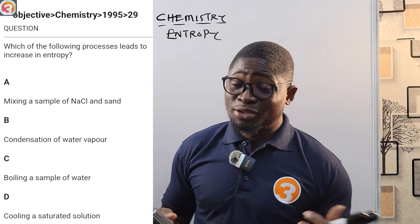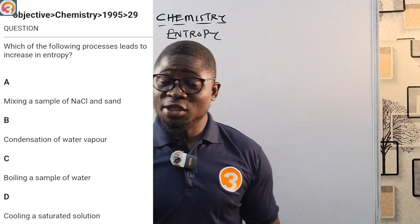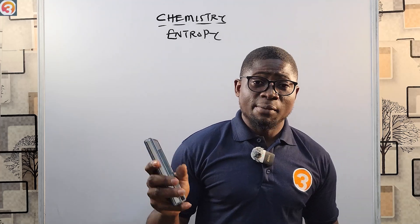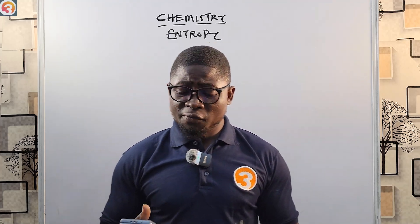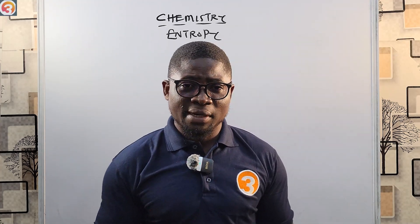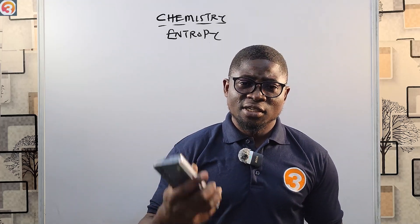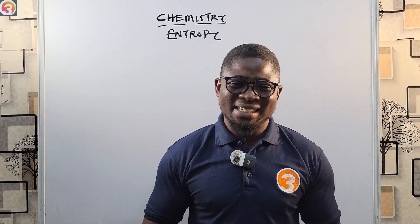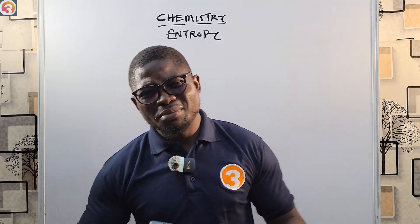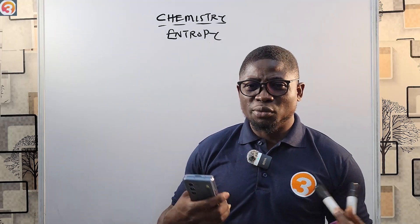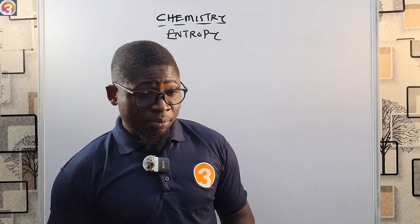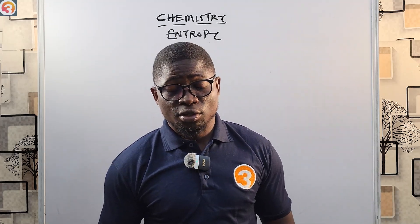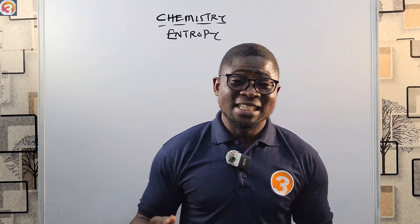We are going to see more questions at the end of this class. Every year JAMB sets a question on entropy, so make sure you have this kind of app where you can search for questions by topic. Go to question search, click chemistry, type 'entropy,' and all the JAMB questions containing entropy will come out.